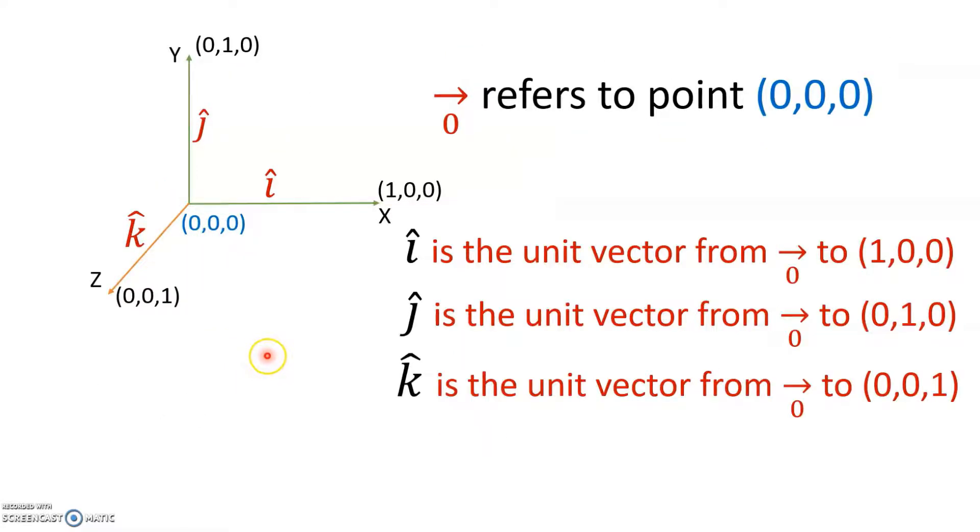Now further we can redefine: i is a unit vector from 0 vector from the origin to (1,0,0) and j, and also k, k-cap. Now each of them are called position vectors because they start from the origin.